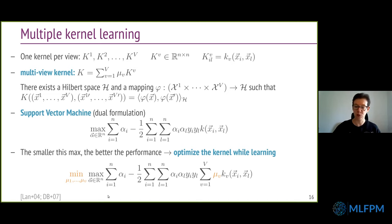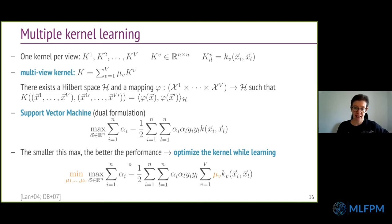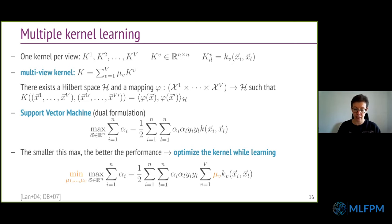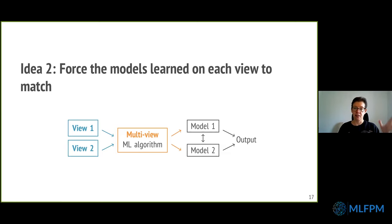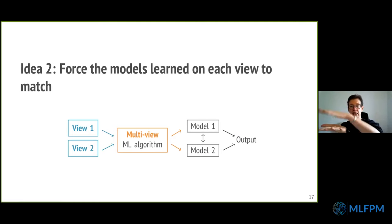To summarize multiple kernel learning: we start from a kernel on each of our different views, and then we can learn a linear combination of those kernels that is optimal at the same time as we're learning an SVM that uses this kernel to make its decision. These ideas were proposed almost 20 years ago. In the two families of approaches presented so far for intermediate integration, the idea was to map all the different views onto a common subspace and then learn a function on that subspace.